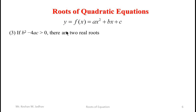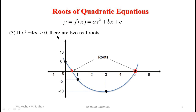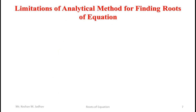If b squared minus 4ac is greater than 0, there are two real roots for the given equation. The curve of that equation will intersect the x-axis at two points. Now there are some limitations of the analytical method for finding roots of equations.